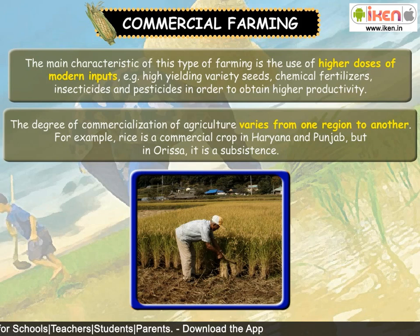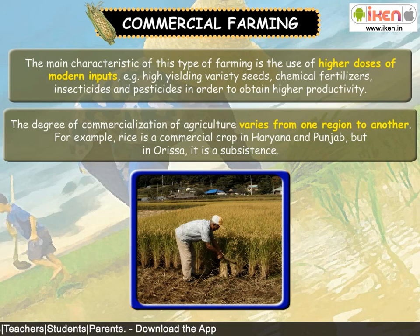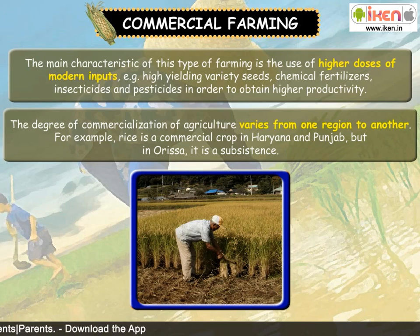For example, rice is a commercial crop in Haryana and Punjab, but in Orissa it is a subsistence crop.